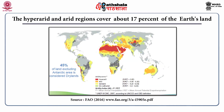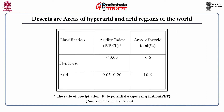Hyperarid and arid regions cover about 17% of the earth's land, and 45% of land excluding Antarctica is considered dry land. In the classification table, hyperarid areas have an aridity index of less than 0.05, and arid areas have an aridity index of 0.05 to 0.20. About 6.6% of the world's area is under hyperarid deserts and about 10.6% under arid deserts.